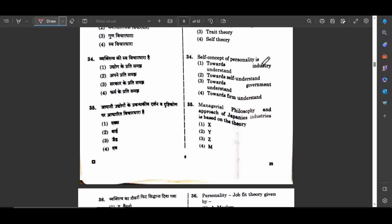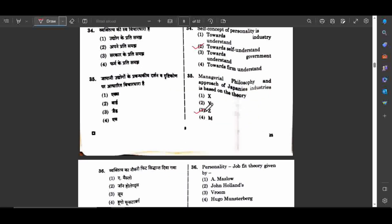Question number 35: Managerial philosophy and approach of Japanese industries is based on the Theory Z. Theory Z was developed by Dr. William Ouchi.